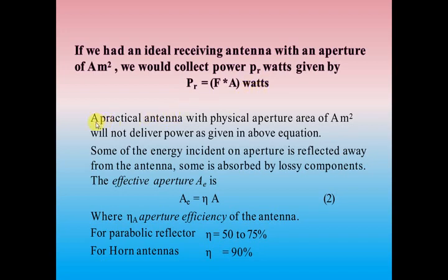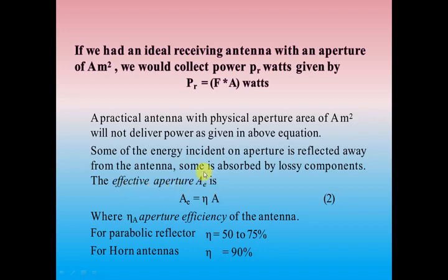A practical antenna with a physical aperture area of A meter square will not deliver power as given in the above equation. The amount of energy incident on the receiver antenna - some part of the transmitted power incident on the receiver antenna can be reflected away, and some part can be absorbed by lossy components as well. Based on that, we have the effective aperture area AE, represented as AE equal to eta times A, where A is the total physical area and eta is the aperture efficiency.